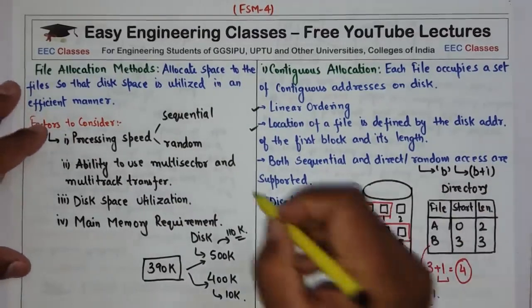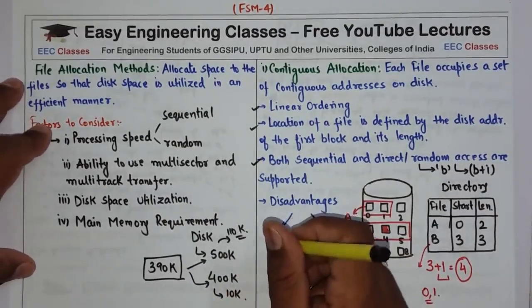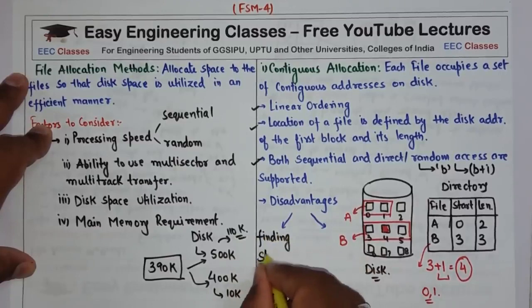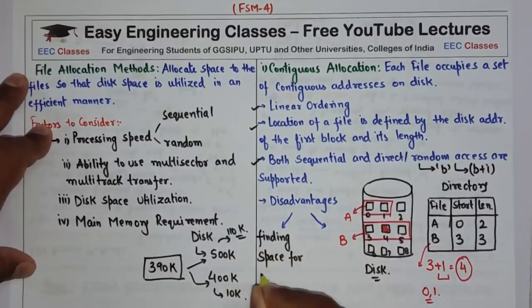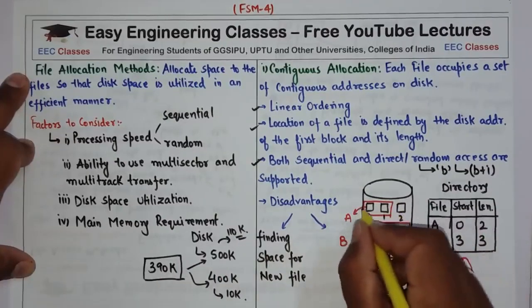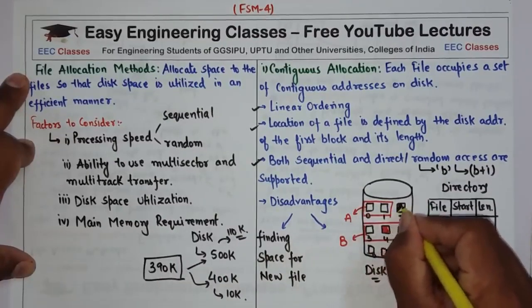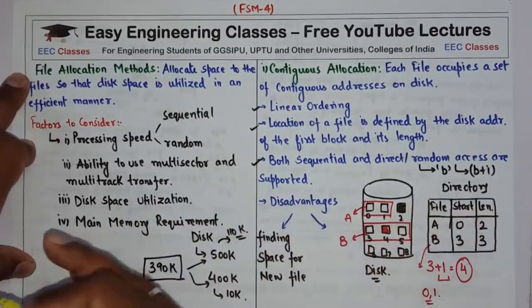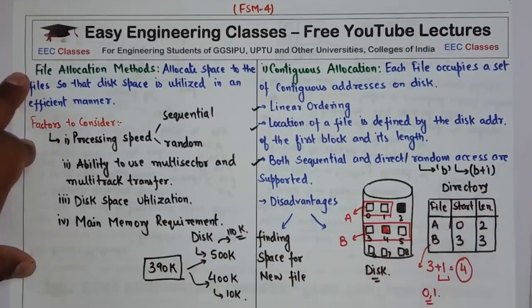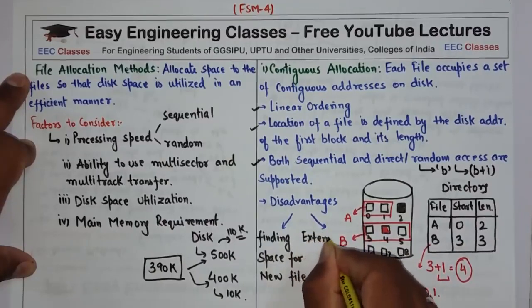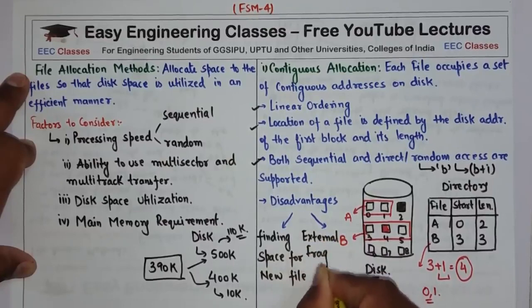There are certain disadvantages of contiguous allocation. The first disadvantage is that finding space for a new file is very difficult because you have to keep track of all free blocks — after allocating files A and B, the remaining free blocks must be tracked. The second and biggest disadvantage is external fragmentation.